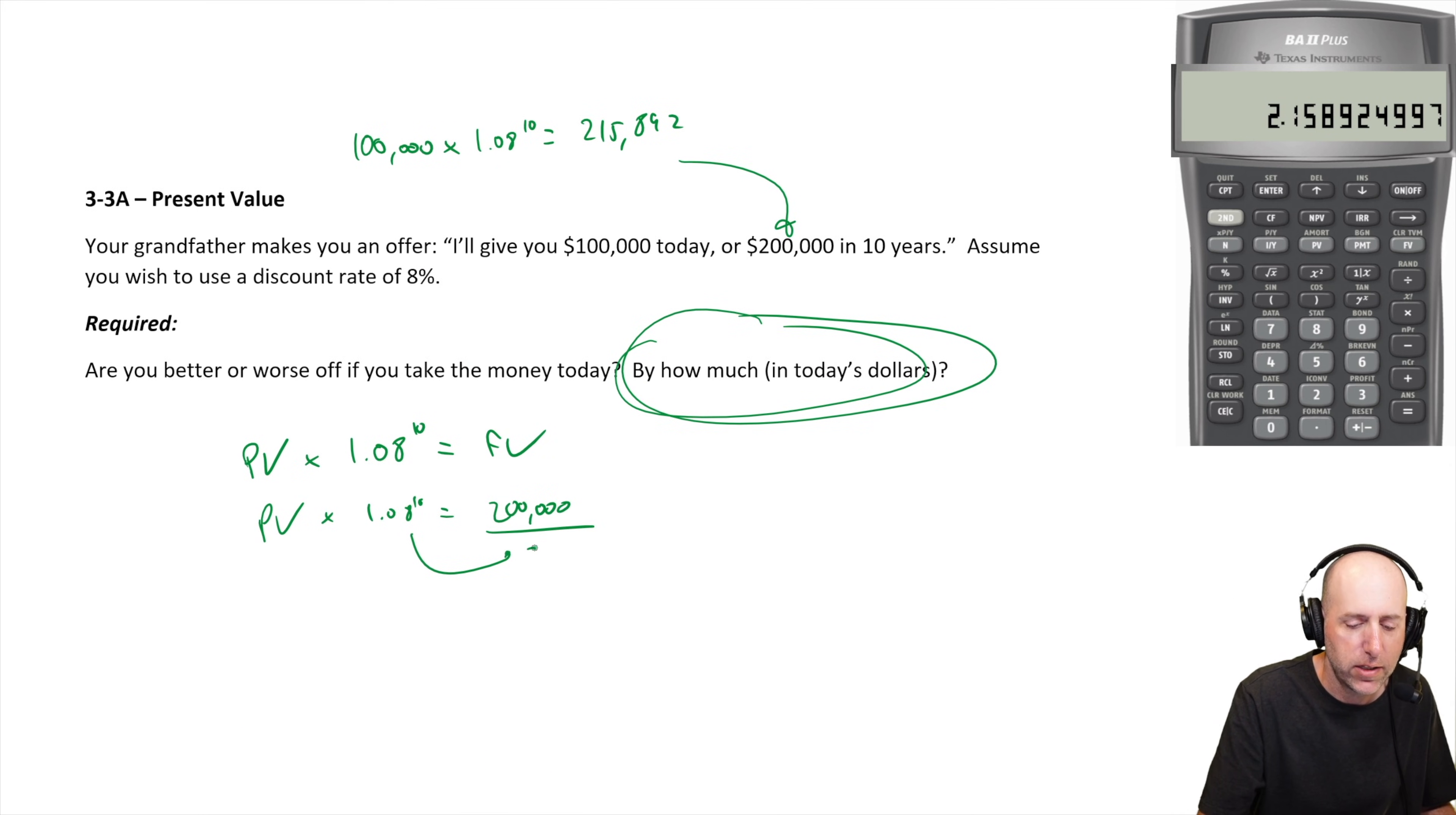And I'm going to divide 200,000 divided by 2.159. And that's going to give me how much that $200,000 is worth today. Again, $200,000 divided by 1.08 to the 10. So $200,000 divided by 2.159.